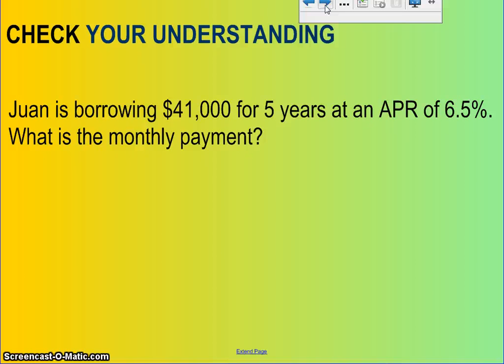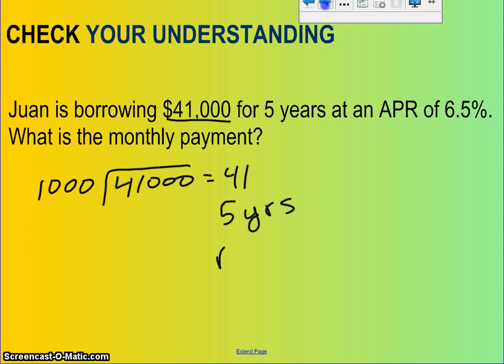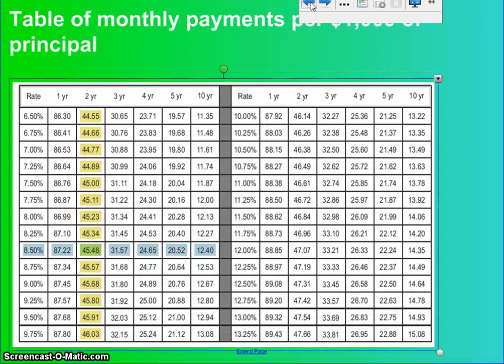It says Juan is borrowing $41,000. If we take the $41,000 and divide it by $1,000, we know it comes out to $41. So it's $41,000 for five years at an APR or rate of 6.5%. Let's go back to our chart. We know it was five years at 6.5%. If we meet up our values, we're looking at $19.57 per thousand.